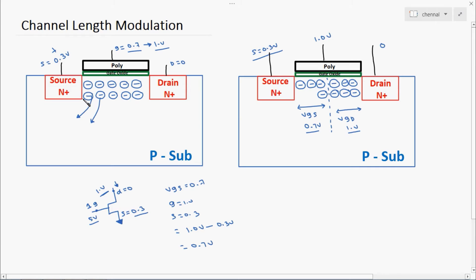Based on our first diagram, the channel was very strong from source to drain. But now the channel width is reduced — the channel length is also reduced. The channel length is also shrinking and the channel width is also shrinking. What will happen if the channel length and channel width decrease or shrink? There won't be proper conduction between source and drain.